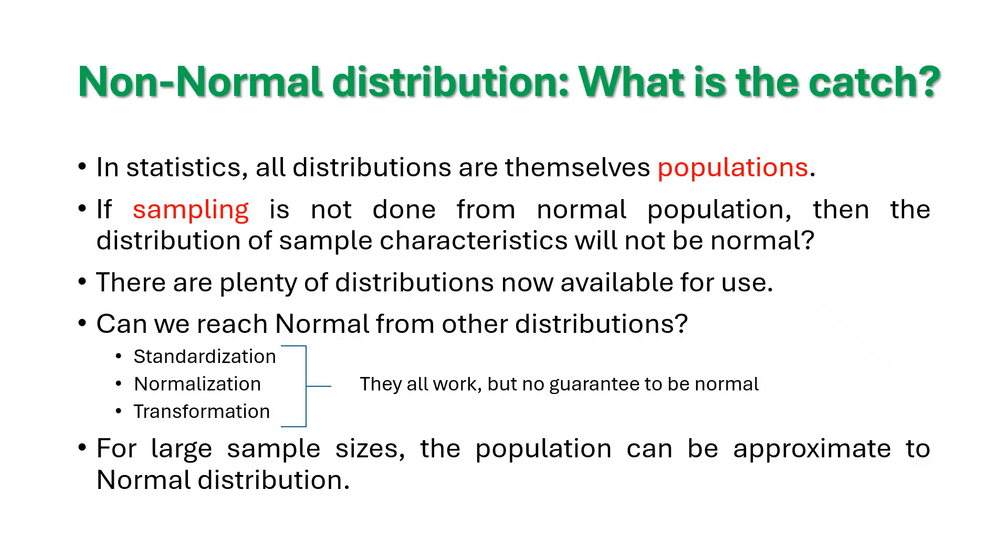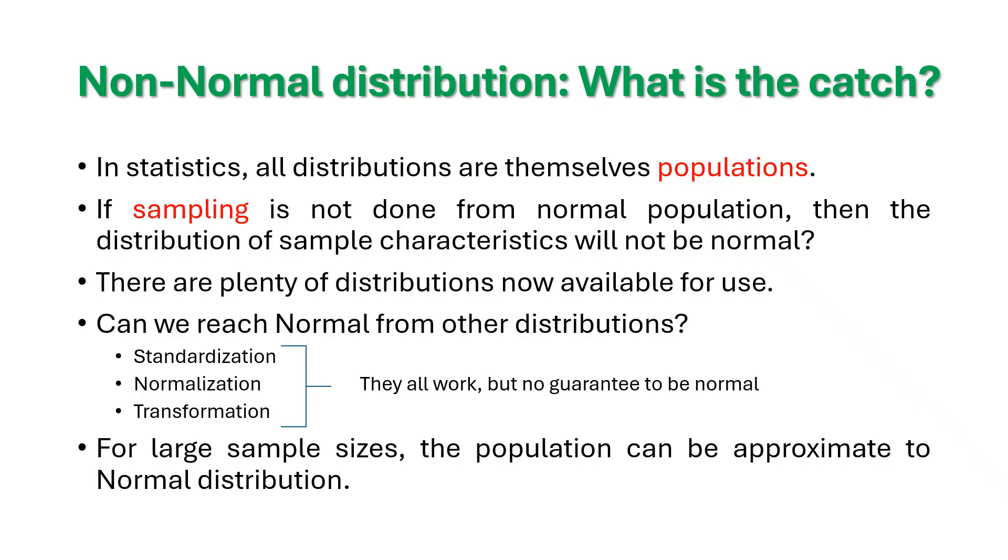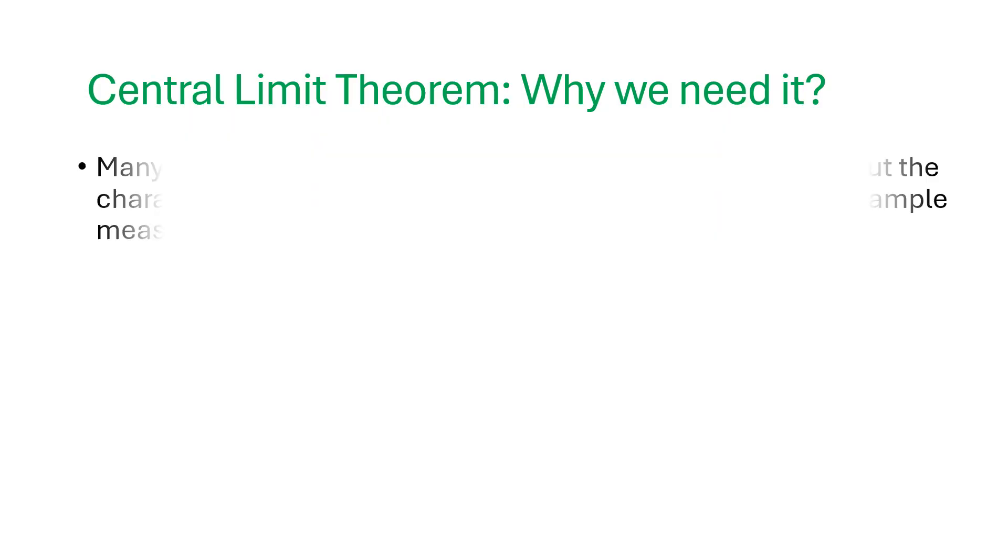There is no guarantee that the data will follow normal. You need to have further transformations. Mathematical transformations, one can use it. Square transformation, square root transformation, logarithmic transformations, etc. Yes, of course, we can, for large samples, we can approximate to normal distribution. That's where the importance of central limit theorem comes.